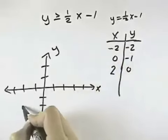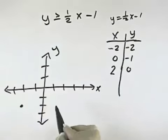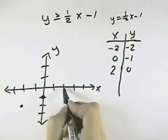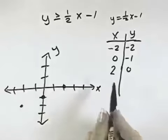So we have (-2, -2). 0 for x would be -1 for y, and then finally 2 for x is 0 for y.